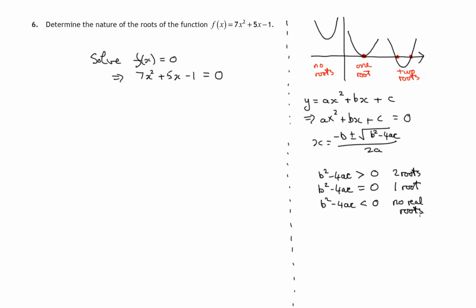Now this quantity b squared minus 4ac is called the discriminant. So it all depends on working out the discriminant here. And we'll compare this with ax squared plus bx plus c equals zero. And you can see that a has a value of seven, b has a value of five, and c has a value of negative one.